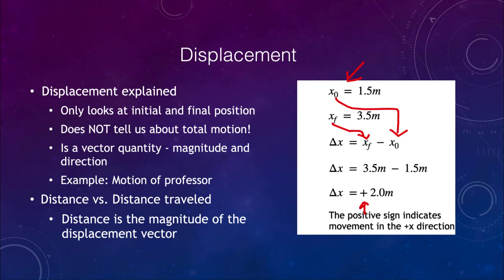And that is very important. The direction in which you're moving is going to be very important as we continue to look through this unit and talk about motion and describing motion in one dimension. Now also looking here, what we want to discuss, and I've mentioned this already, is that there is a difference between distance and distance traveled. The distance is the magnitude of the displacement vector.